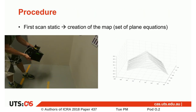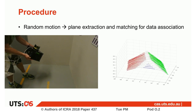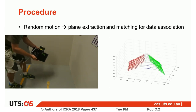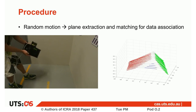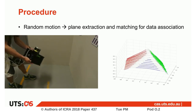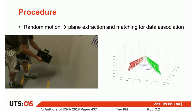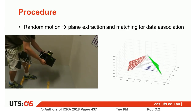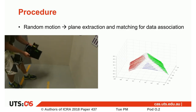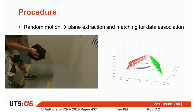The calibration target exploited in our probabilistic framework is a simple set of planes. The map is created from the first static LiDAR scan. Then the sensor suite is moved randomly and the different planes are tracked from scan to scan. Our method is quite robust if tracking is lost for a short period of time. This process associates each LiDAR point with the corresponding map plane.